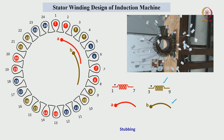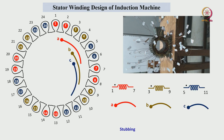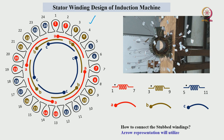The stubbing for coil 2 placed in slot 3 and 9 is represented as stubbed coil 2, with coil 1 being 1-to-7. The third coil related to C phase is placed in 5th and 11th slots, represented as stubbed coil 3. We represent all 12 stubbed coils the same way. We can see red color for 4 stubbed coils, brown for 4, and blue for another 4 — all 12 stubbed coils to be connected to complete the winding.